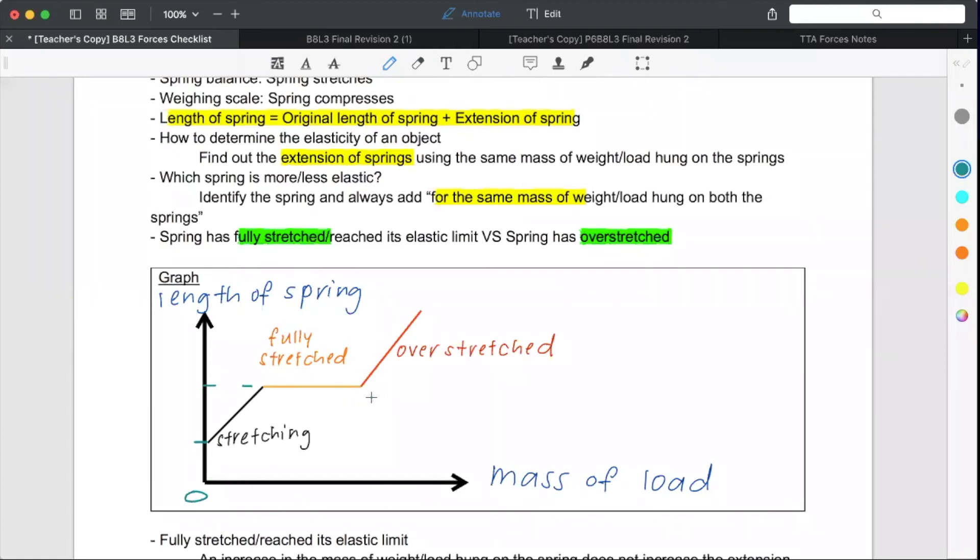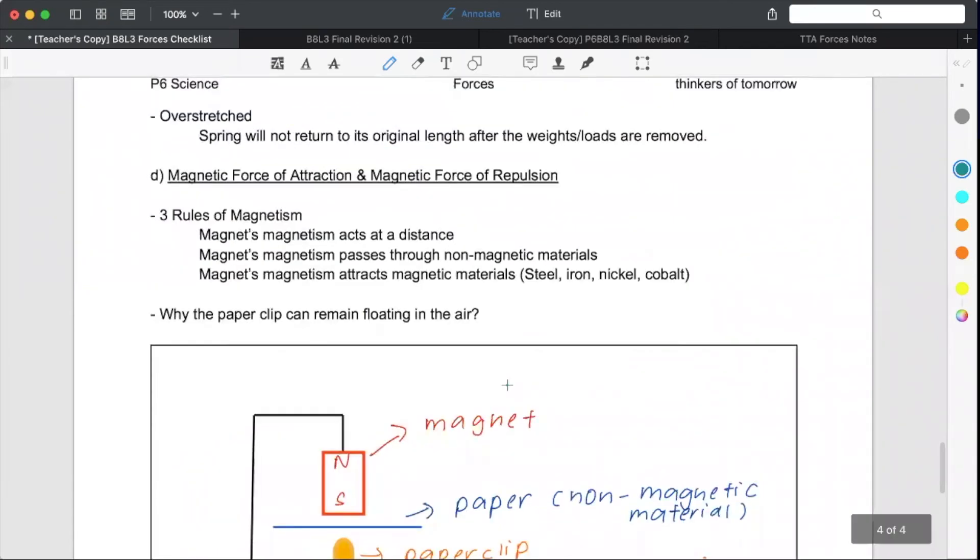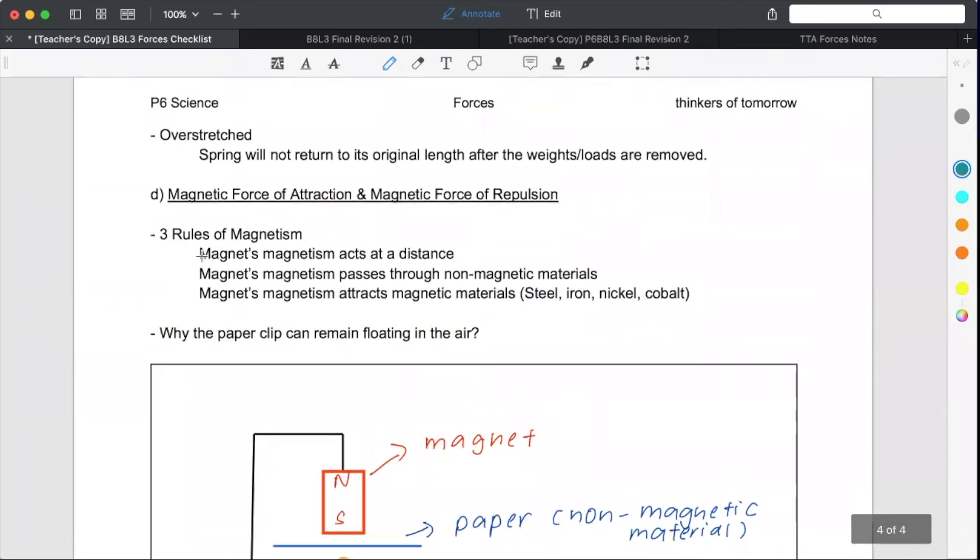Now, he cannot go back to his original length already. So in this case, it will have been overstretched. All these are found in your forces notes. Overstretched. Spring will not return to its original length after the weights or loads are removed.